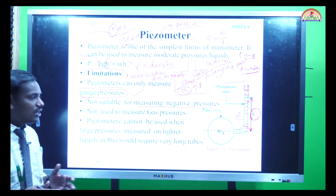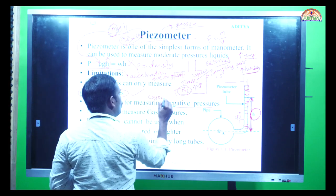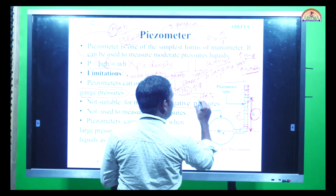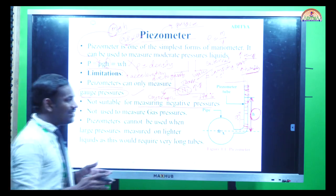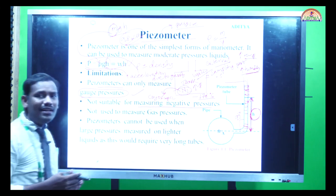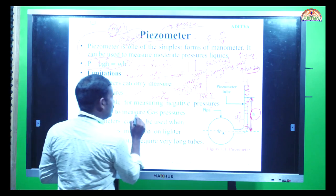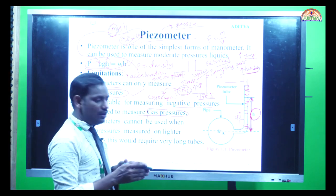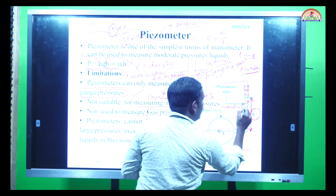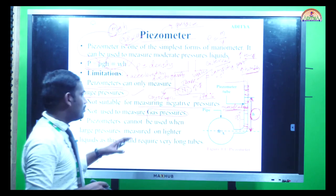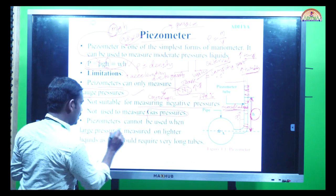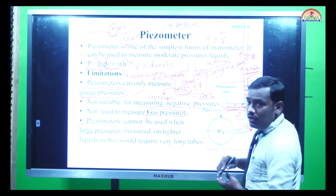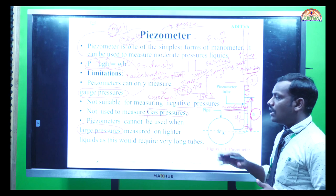Piezometers are not suitable for measuring negative pressure. If you are working with a cryoscopic liquid — for example, liquid nitrogen, which stays liquid at minus 176 degrees centigrade — negative pressure alters the dynamics and the equation cannot be applied. Piezometers also cannot be used to measure gas pressure; liquefied petroleum gas and similar gases cannot be accurately measured. Finally, piezometers cannot be used when large pressures are to be measured, because you would need a very long tube to accommodate the rise in fluid height, which is not practical.